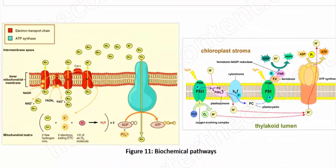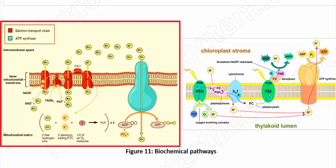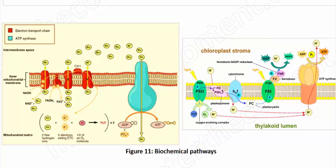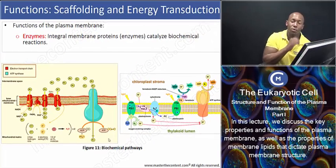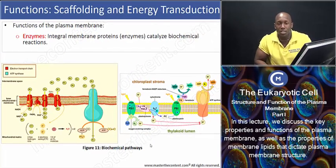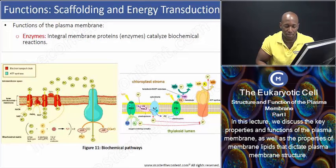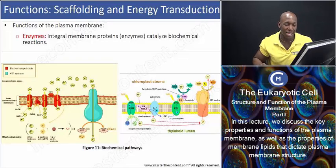Looking at these two reactions, we see two key fundamental reactions. One, we have the production of energy by mitochondria. And two, we have the production of food by chloroplasts — all of which are controlled by a complex series of chemical reactions. The only way to efficiently organize all these interdependent biochemical processes is to order them in some manner, and the plasma membrane actually provides an excellent site to do so.